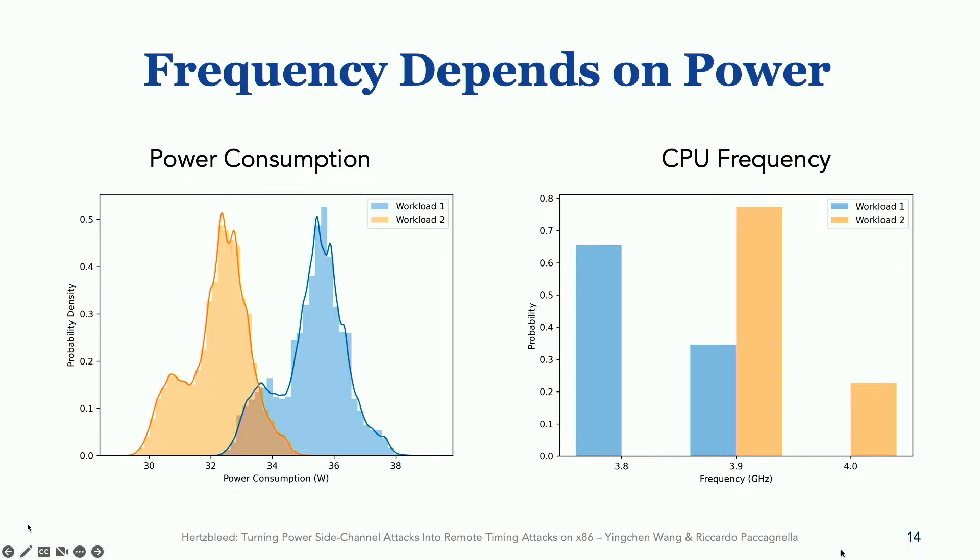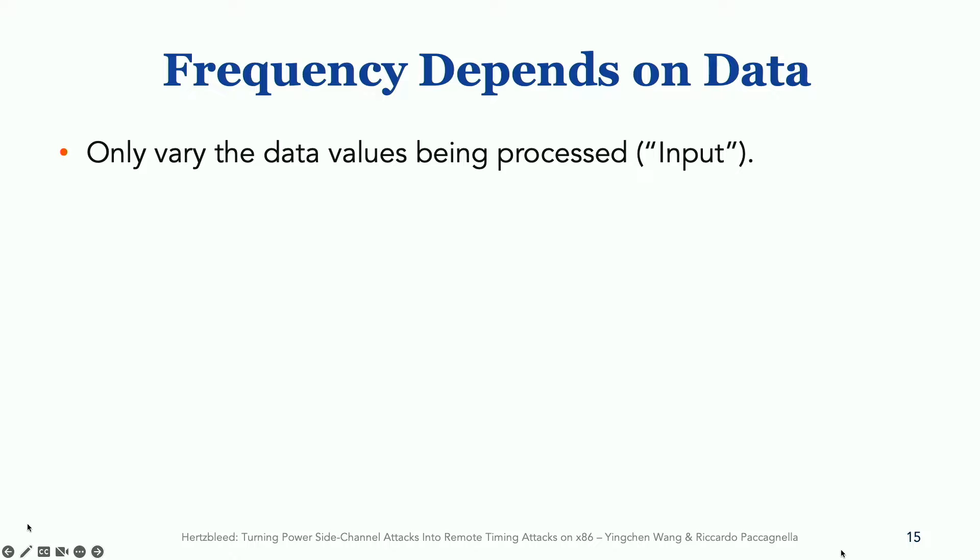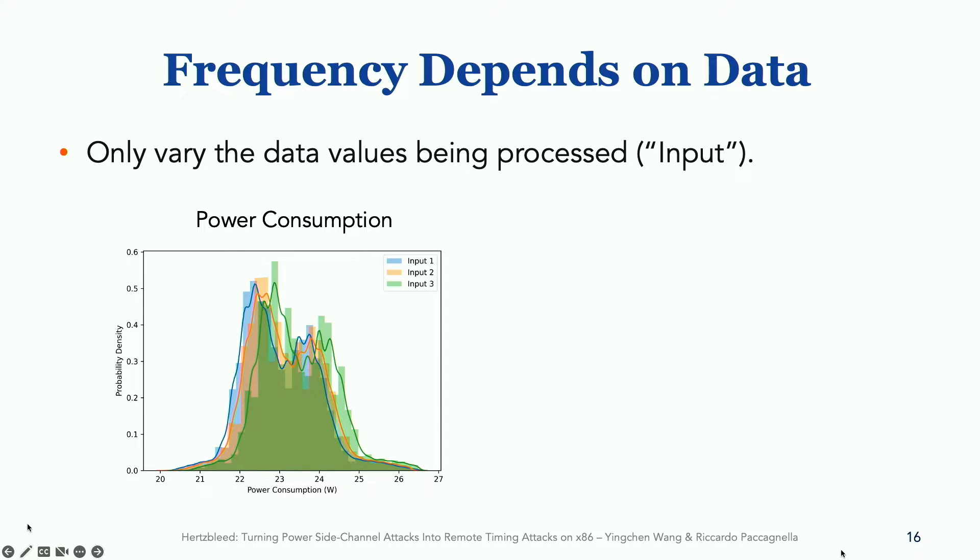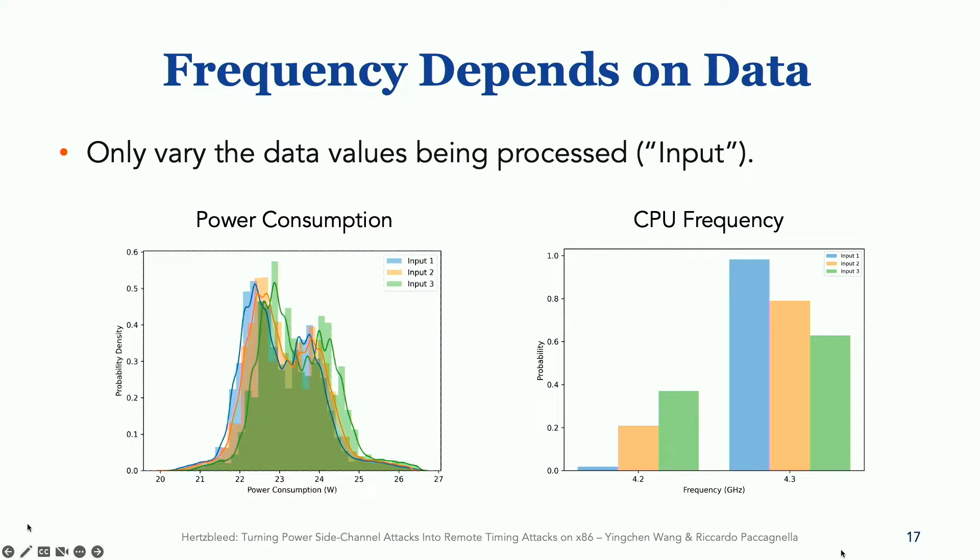So one thing we know from power side channels, since we studied them for 25 years, is that they leak information that is about very small changes in a program's execution. And power side channels are even known to be data dependent. So we can ask the question, is frequency also data dependent? And to answer this question, we run a new experiment where we run a constant time workload. This workload has a fixed set of constant time instructions, and we only change the data that these instructions are processing, which is the input. Now, we know from prior work that when we change the data that is computed on by instructions, we can have different power consumptions. However, the key observation is that these differences in power consumption also show as differences in frequency. And once again, the higher the power consumption, the lower the frequency. As we will see, this is a very important observation because it will allow us to mount timing attacks even on cryptographic implementations that follow constant time programming principles.